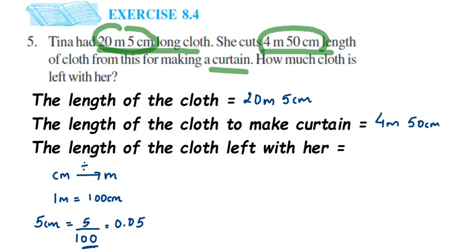After two digits you have to place the decimal because there are two zeros. So it will be 5, then 0, then put decimal, then 0, so it's 0.05. So we have 20 meter and 5 centimeter. 5 centimeter equals 0.05 meter.